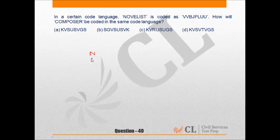For NOVELIST: N-O-V-E-L-I-S-T. The position of N is 14 and the position of V is 22, so 14 plus 8 equals 22.